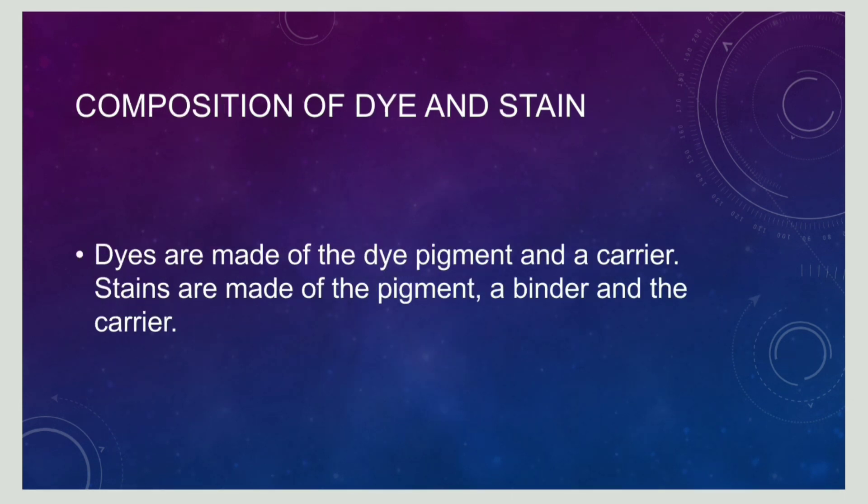If we look at the composition of a dye and a stain: a dye has only a pigment and a carrier, whereas a stain has a pigment, a binder, and a carrier.